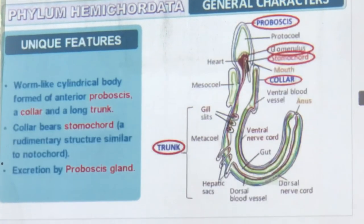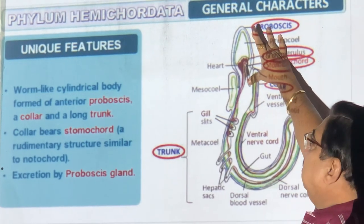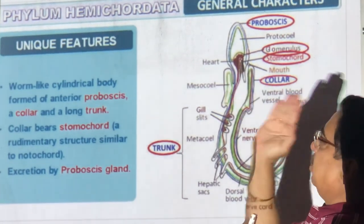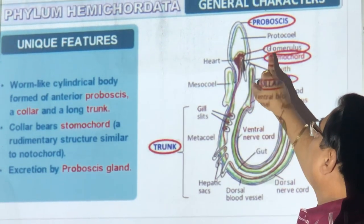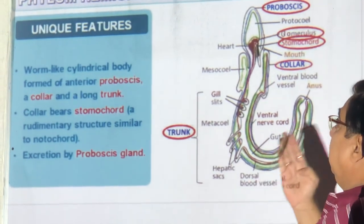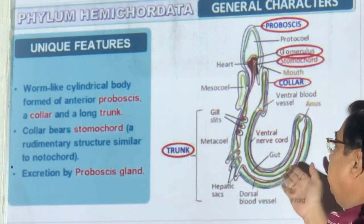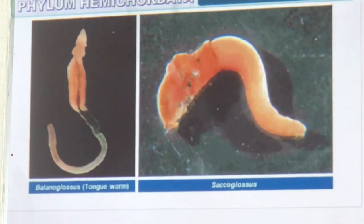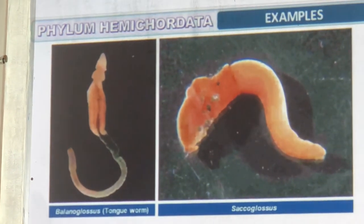Unique features of Hemichordata: worm-like body with an anterior proboscis like a thumb, a collar, and a big trunk. The collar has a stomochord — something which behaves like a notochord and can make it stand like a snake. A proboscis gland is present for excretion. Pharyngeal gill slits are present. So we are finding gill slits, a stomochord, and a digestive system all developing — it is becoming a chordate but is not yet a full chordate.